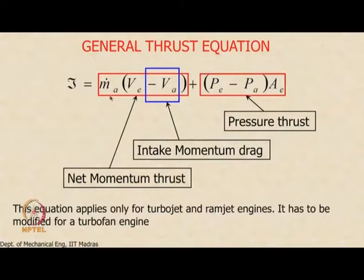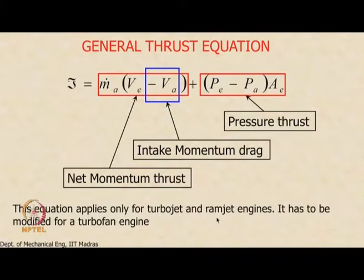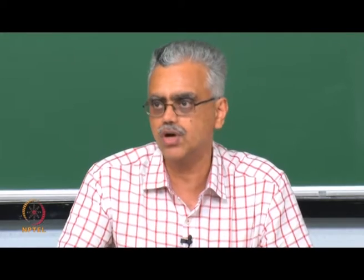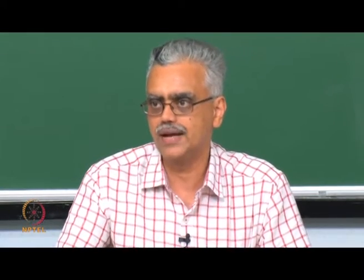This equation applies only to a single stream engine — it is applicable to turbojet and ramjet engines, both of which have a single stream. A turbofan engine has two streams: the fan stream (cold stream) and the core engine stream (hot stream), so we need to modify the expression slightly for a turbofan engine.